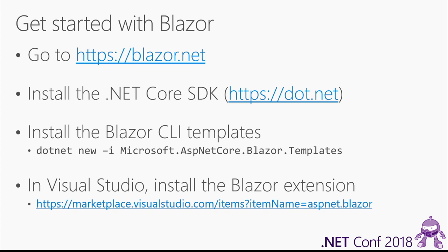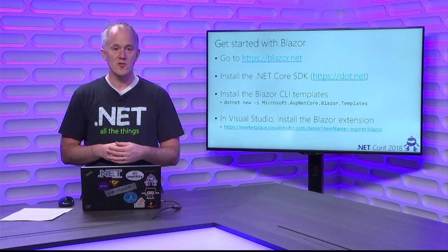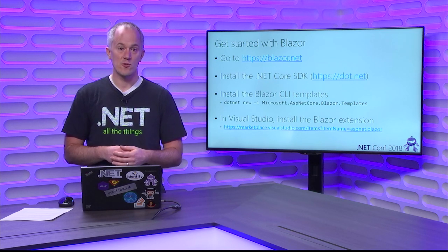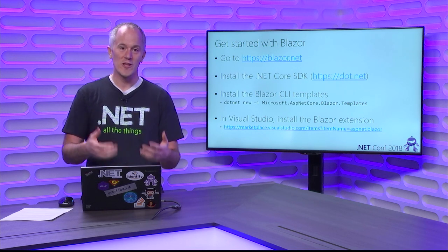How can you get started with this? First you're going to want to go to Blazor.NET, and then you're going to need the .NET Core SDK installed. If you're on the command line, you can install the Blazor templates using the .NET Core SDK — just run `dotnet new -i` with the name of the Blazor template pack. That will work on Windows, Mac, and Linux for cross-platform Blazor development. If you're on Windows in Visual Studio, you can install our Blazor Visual Studio extension — the Blazor language services — which gives you the Blazor templates along with a great tooling and editing experience.